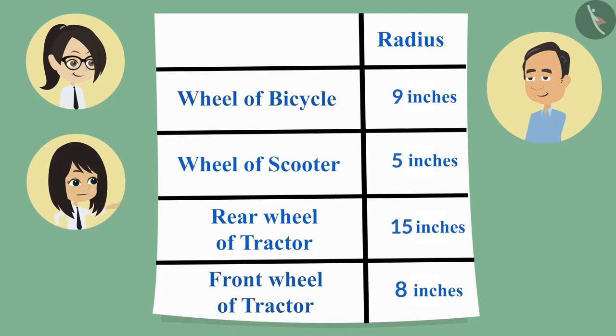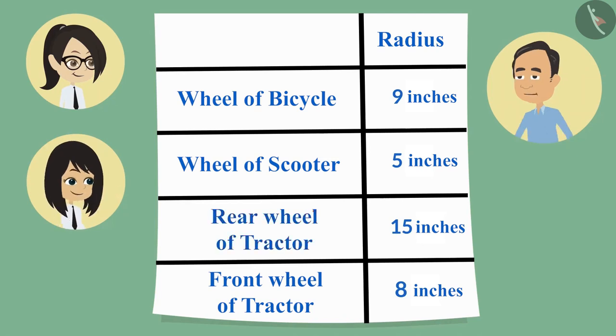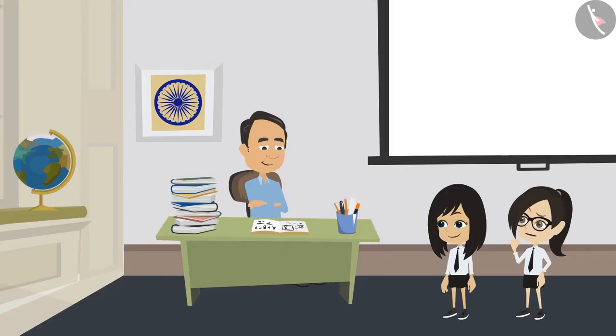Sir, we had seen all the wheels. So we were able to tell that rear wheel of the tractor is the largest. I thought that you were looking at the measurement of these radius. Sir, how can we tell whether a circle is small or big by measuring the radius?